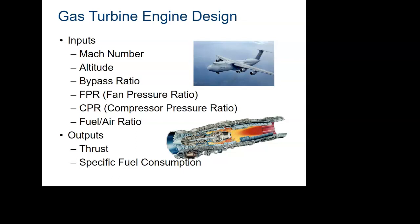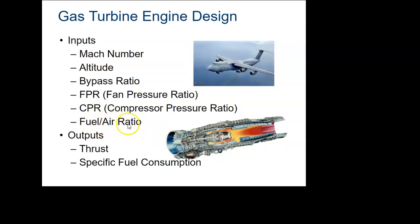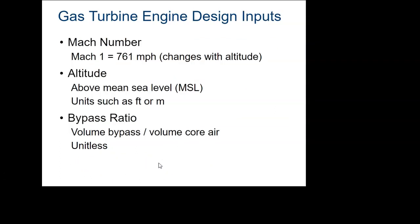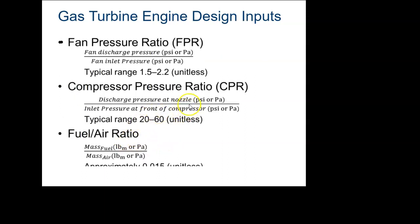When we get to our design project, we'll use a model with several inputs. Concepts you'll need to know: Mach number, altitude, bypass ratio, fan pressure ratio — which is the pressure at the inlet versus outlet of the fan — and compressor ratio, which is outlet over inlet. Also the fuel-to-air mixture. The model will output thrust and specific fuel consumption. Fan pressure ratio and typical values are shown here.